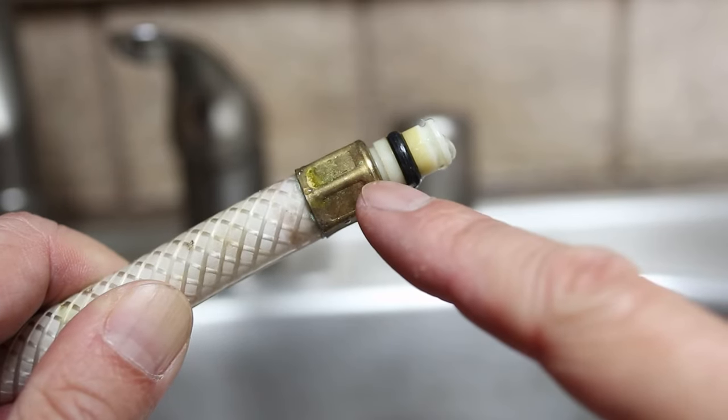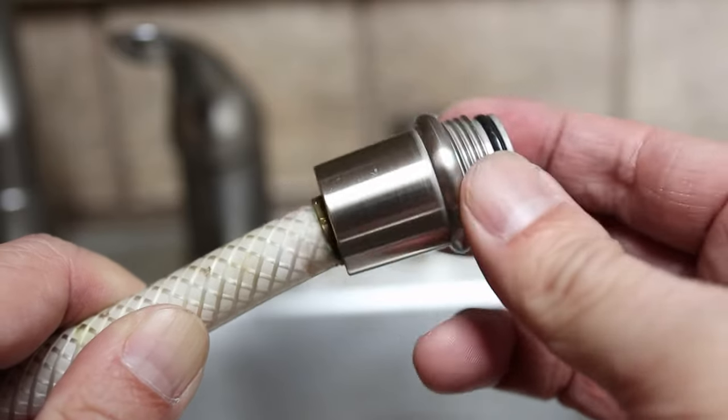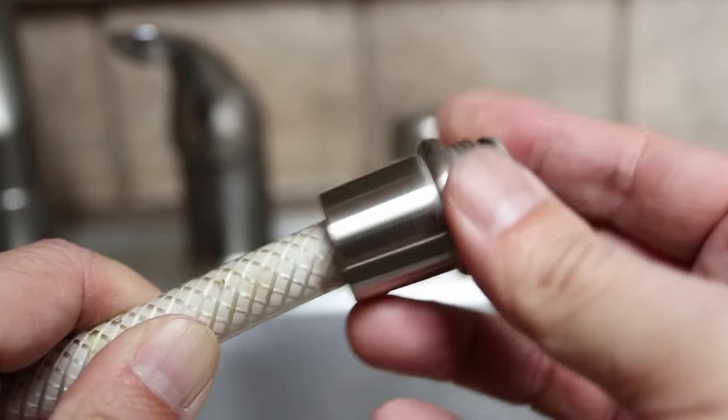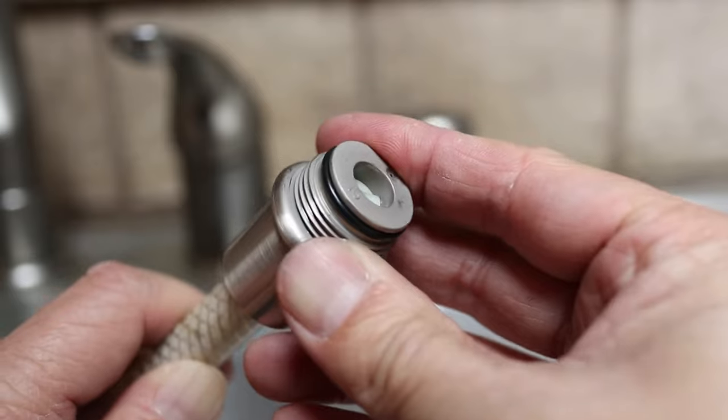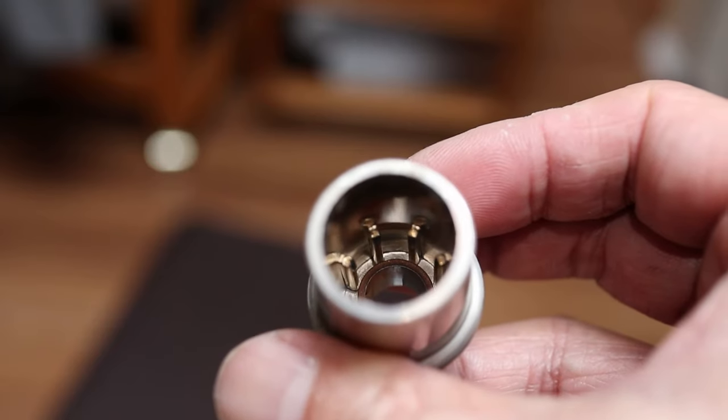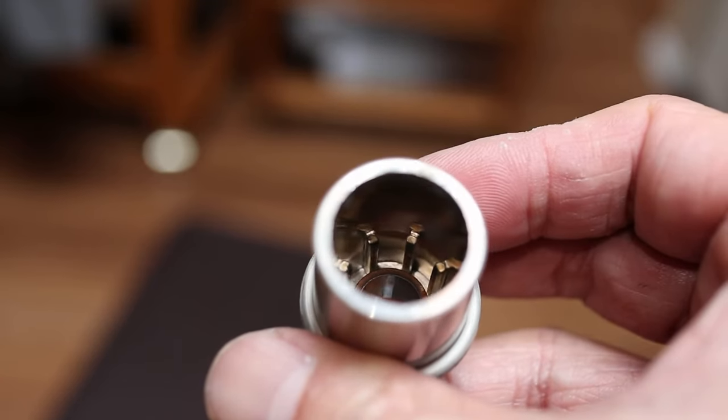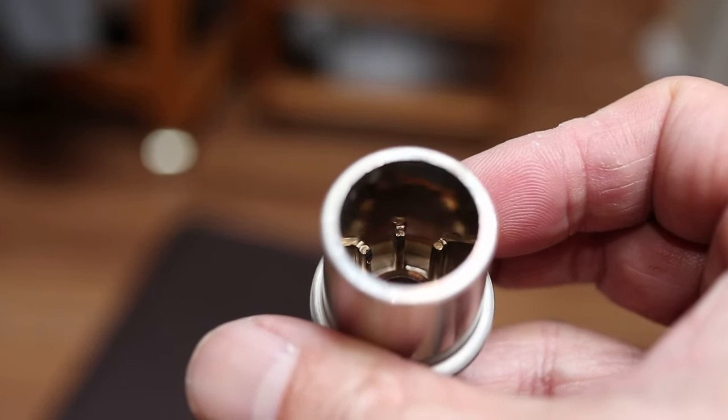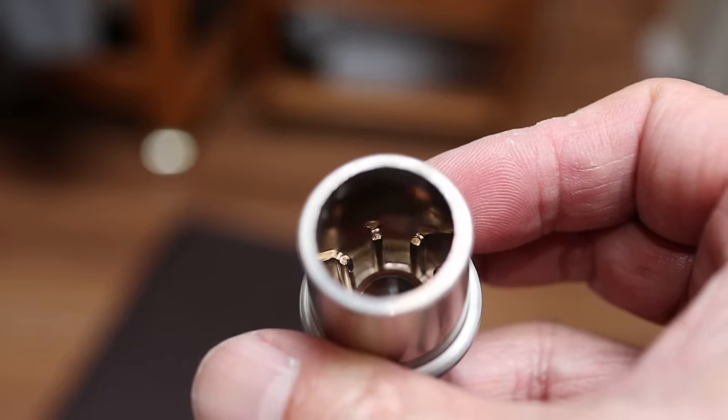This is where I ran into my issue. When I tried to put the Danco collar on it wouldn't fit. No matter how hard I pushed it wouldn't go over the brass fitting on the water tube. That's when I saw the little fins inside the collar that made the inside diameter too small. I'm not exactly sure why they designed it this way since it's supposed to be universal.